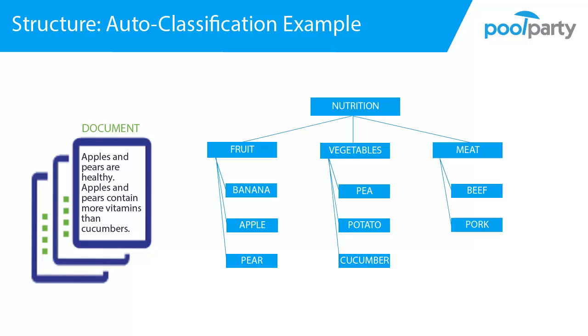What you need is a thesaurus or taxonomy that describes your domain. For our example let's assume that we are interested in the domain of nutrition. We have many documents about nutrition and we have a thesaurus that contains all concepts that are relevant for the domain of nutrition. Now we can use the PoolParty Extractor to classify our documents. The PoolParty Extractor will recognize all concepts in the text that are in your thesaurus. Also note that the PoolParty Extractor will recognize the concepts in singular and plural as well as in other word forms.